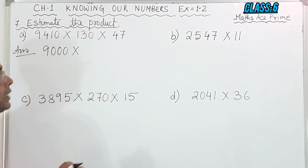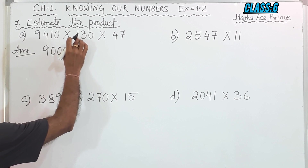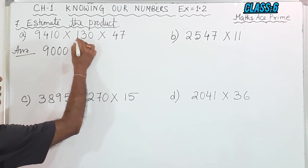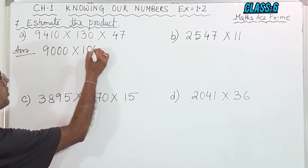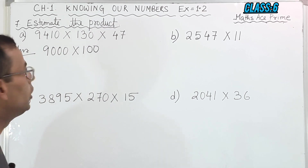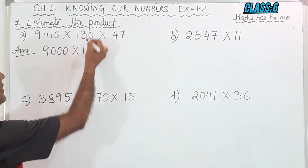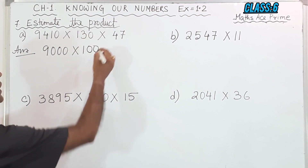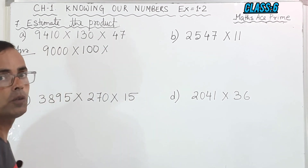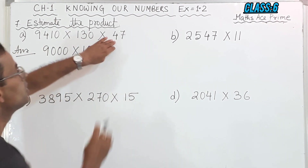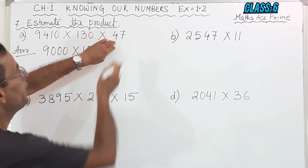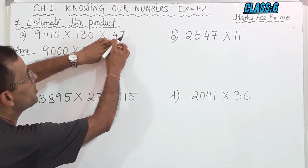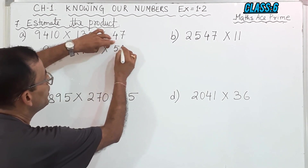Now the next one is 130. We will round off in the 100s place. The digit after 1 is 3, so it will become 100. If it was 6, then this would have become 200. Now next one is 47. We will round off in the 10s. After 4, there is 7. Since 7 is 5 and above, 1 will be added to 4, so this will become 50.